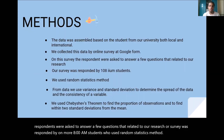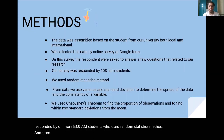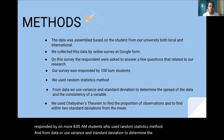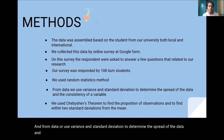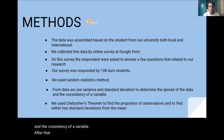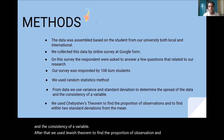From the data, we used variance and standard deviation to determine the spread of the data and the consistency of the variables. After that, we used Chebyshev's theorem to find the proportion of observations and to find how far the data falls from the standard deviation from the mean.